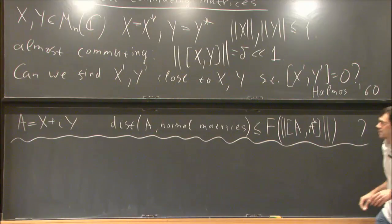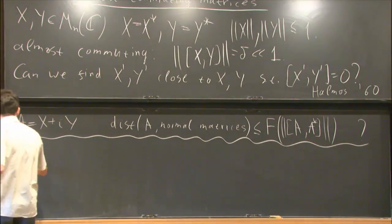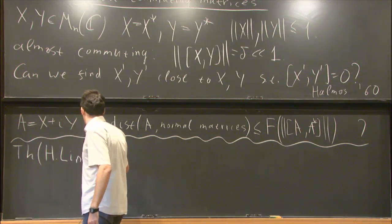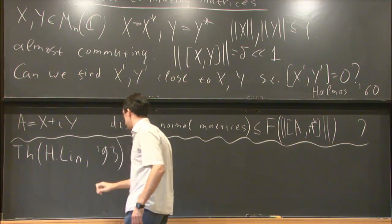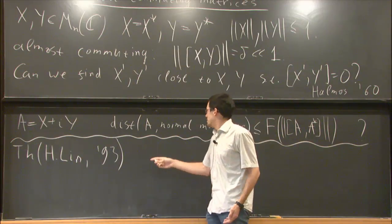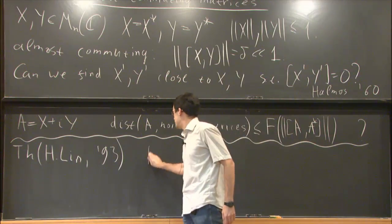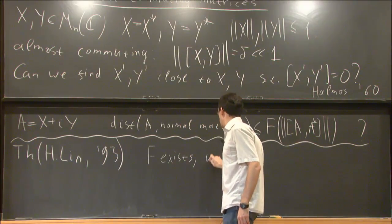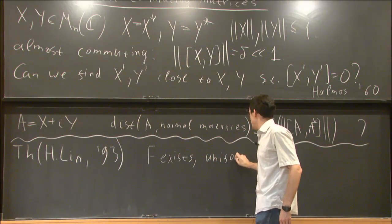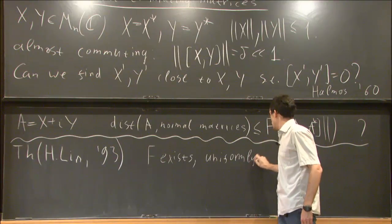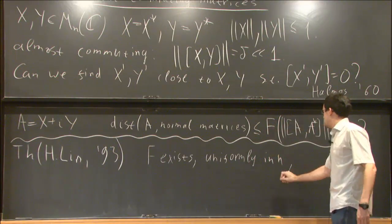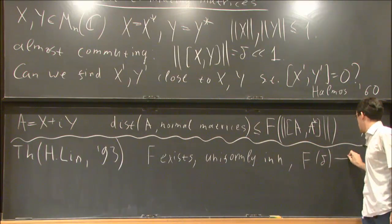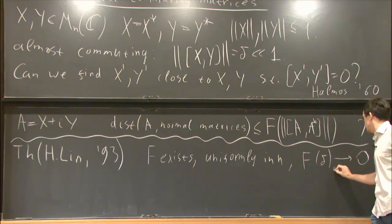Theorem by Lin, 1993: basically such function exists uniformly in n, and goes to zero as delta goes to zero.